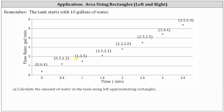Because we're concerned about the water after the first three minutes, let's mark off the interval from zero to three minutes. Zero minutes is here and three minutes is here. We need to be careful not to use this last point that goes out to 3.5 minutes. Because we have the flow rates every 0.5 minutes, we will mark off subintervals every 0.5 minutes.